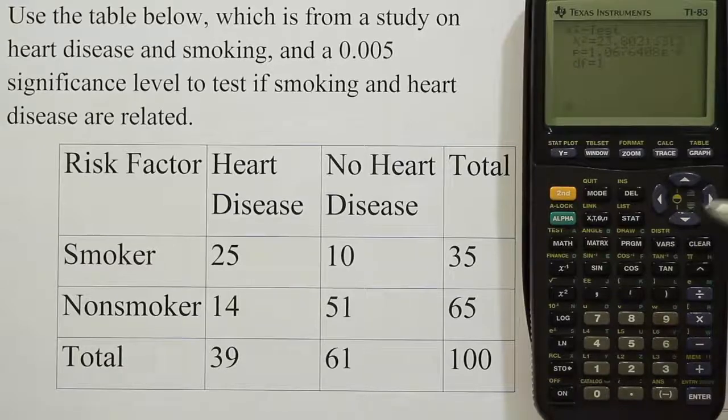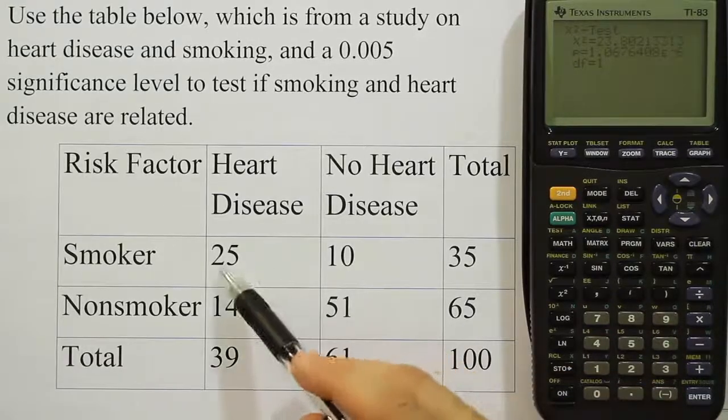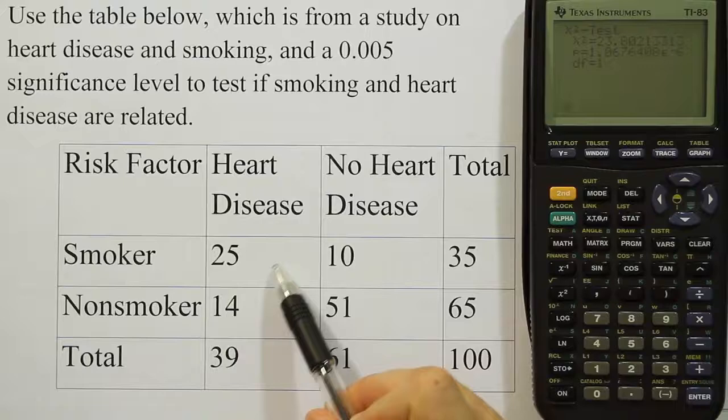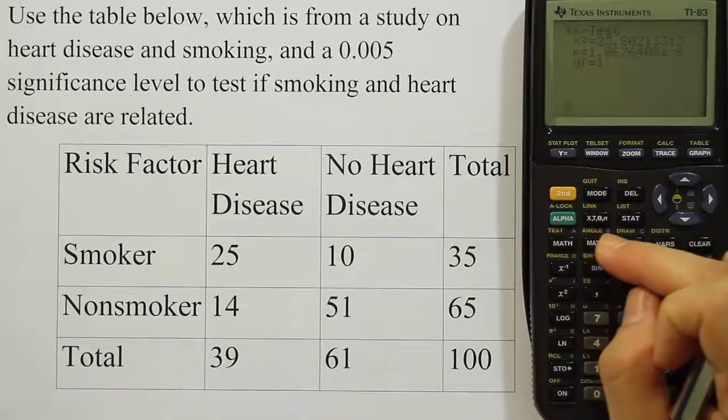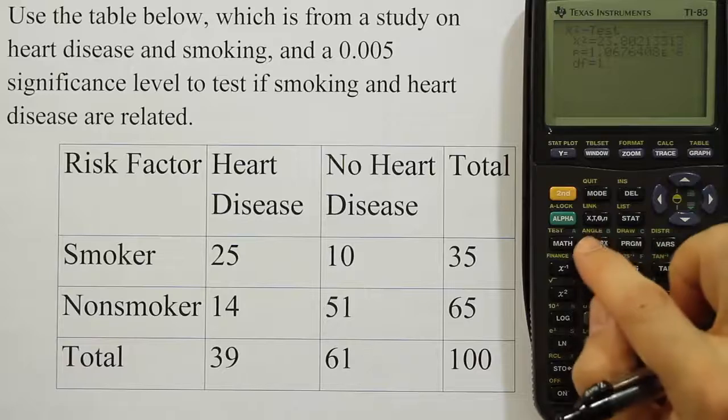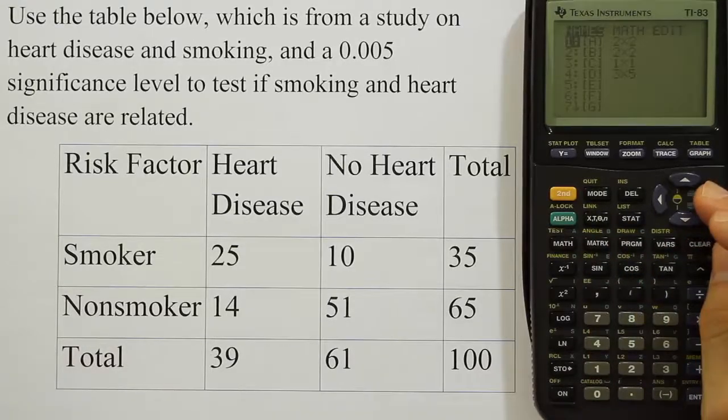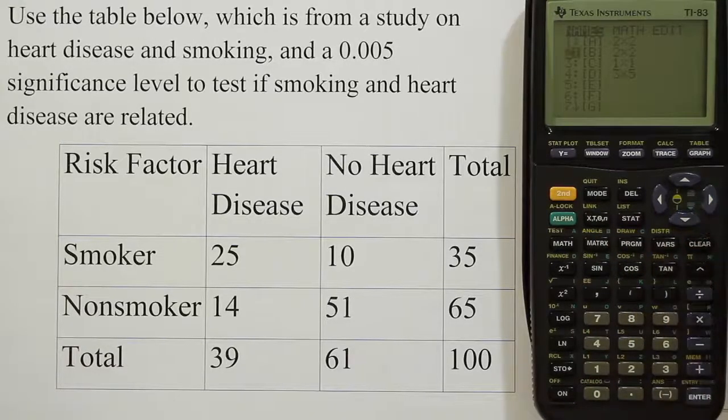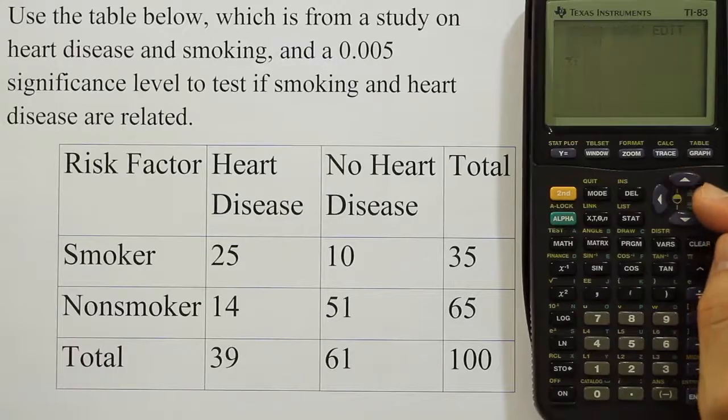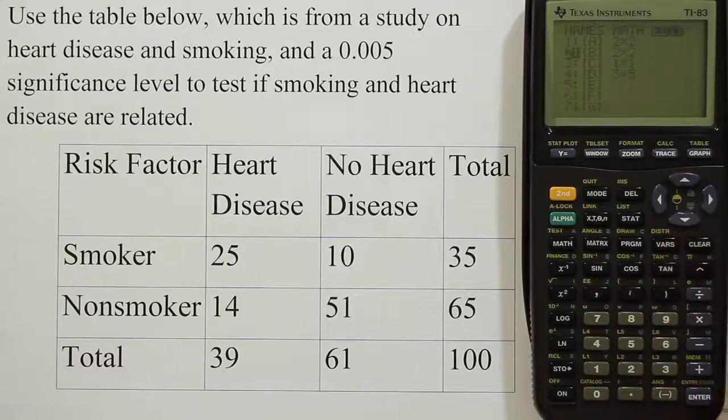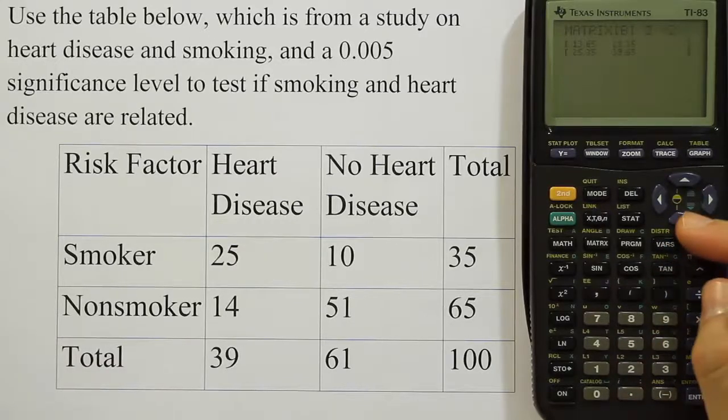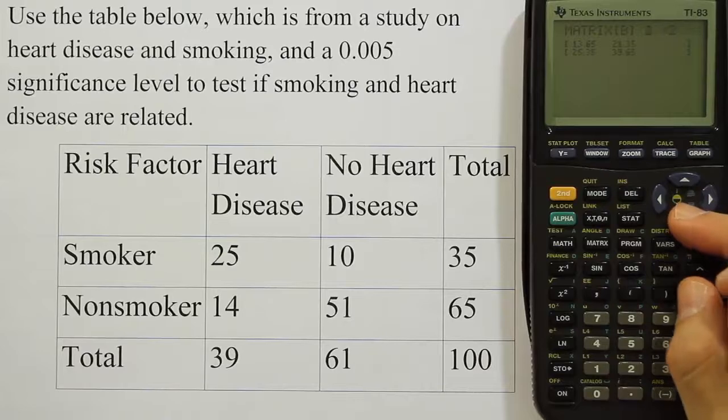Now if you want to see your expected values—we have the observed values here, and normally we would fill in the expected values for each cell. We can actually go get those if we press the matrix key again. Then we're going to go over to where it says matrix two. I'm going to arrow over to where it says edit and take option two or matrix two. When I do that, I'll be able to see the expected values that the calculator calculated.